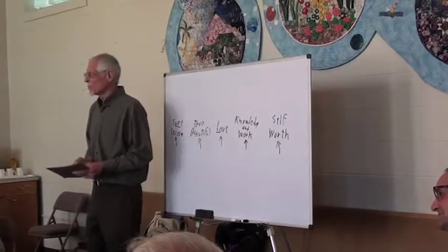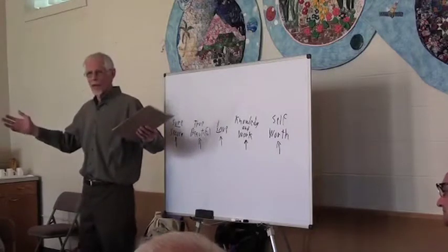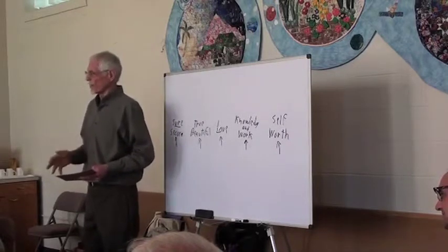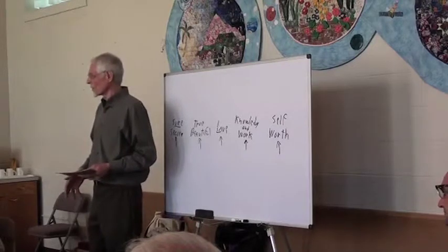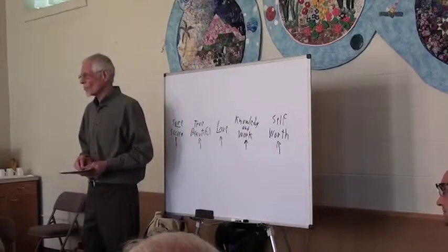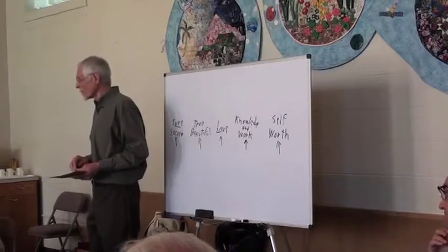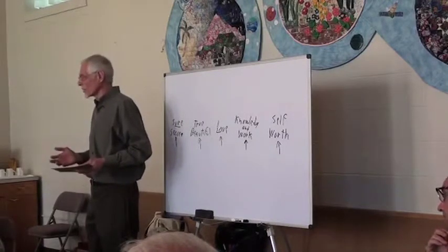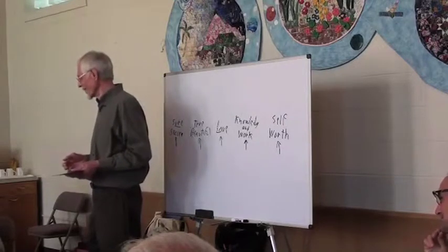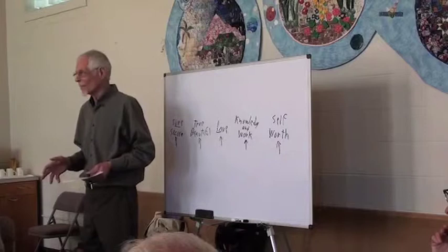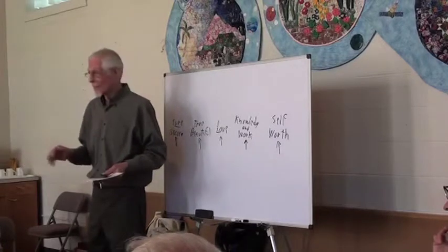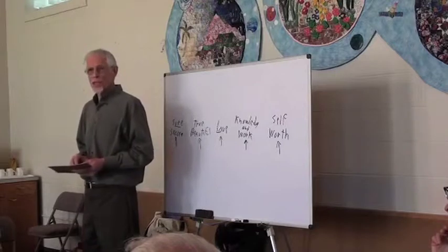And here again, Bultmann explains to us that however many friends we have, however abundant our relationships are, however good they are, still life drives us into the final solitude. There are just some things about life that you are on your own about. I think it was Luther who said, everybody has to do his own dying. It doesn't matter how many people are standing around weeping or clapping or whatever they're doing. You have to do your own dying.